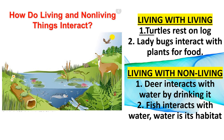Now, living with non-living. Deer interacts with water by drinking it. Number two: fish interact with water because water is their habitat. Now I want you to pause the video and write two more examples of interactions — one that is living with living, and another that is living with non-living.